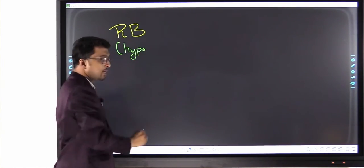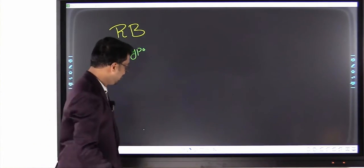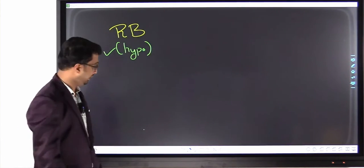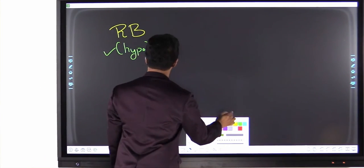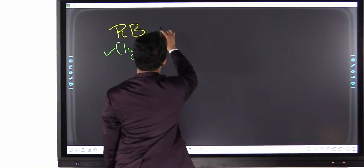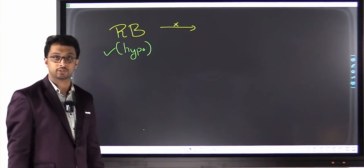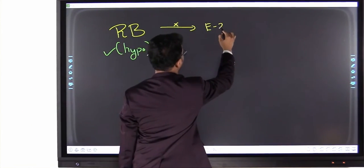Now what is this basically, RB gene? It's a tumor suppressor gene, it's an inhibitory gene. So it's an active form, hypophosphorylated. And we studied that this hypophosphorylated form inhibits a gene, another gene. What was that? E2F.